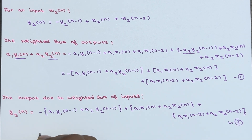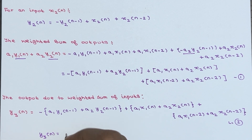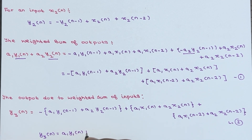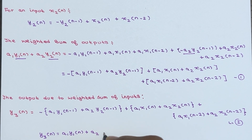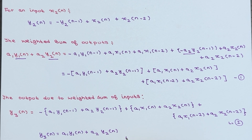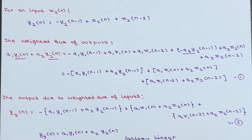From this, the conclusion is y3(n) = a1·y1(n) + a2·y2(n). That is why we can say the system is a linear system.